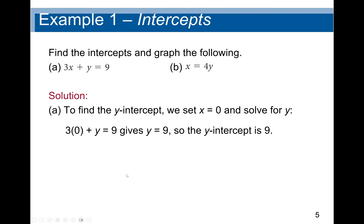Looking at the solution: to find the y-intercept, we set x equal to zero and solve for y. So it will be 3 times 0, plus y equals 9. Since 3 times zero is zero, y equals nine. So the y-intercept is nine.